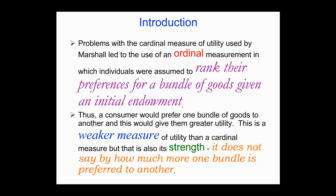There is a problem with measuring utility by a subjective measure like utils. In the example used, a pint of beer might yield ten utils for me, but you might have a different understanding of what a util is and give it a different number. A util is a cardinal measure — it tries to put a precise number on satisfaction. But it's a very difficult and subjective measure. Because of this problem with the cardinal measure used by Marshall, there was a move to use an ordinal measure of utility, in which individuals were assumed to rank their preferences for a bundle of goods given an initial endowment. This is something we will explore shortly in more depth.